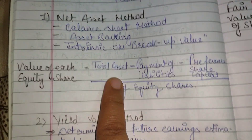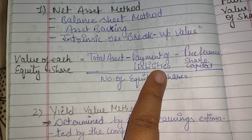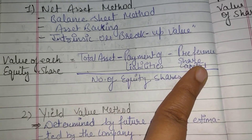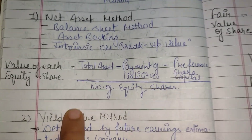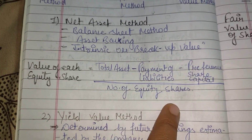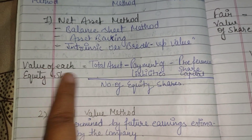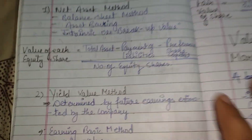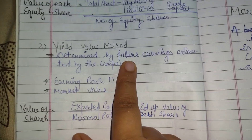Let's take an example. Total assets are two lakhs, liabilities payment is twenty thousand, preference share capital is fifty thousand, and the number of equity shares is five hundred. We will solve this to find the value of each equity share.